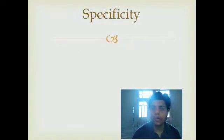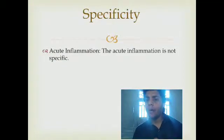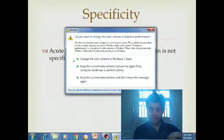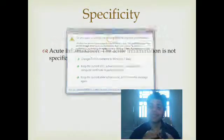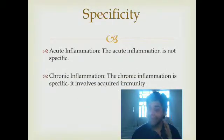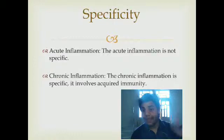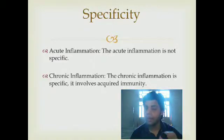Now let's talk about the specificity of acute and chronic inflammation. In the case of acute inflammation, it does not have specificity — the inflammation may be activated at any part of the body. But in the case of chronic inflammation, it is a specific response. In acute inflammation, innate immunity is activated, whereas in chronic inflammation, specific immunity — the adaptive immune system — is activated.